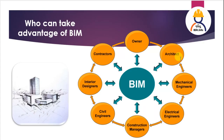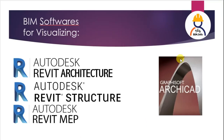The first BIM tool is 3D Visualizing using Revit. Revit has three versions: Revit Architecture, Revit Structure, and Revit MEP. Revit Architecture handles the building model — elevations, interior, and top surface views.